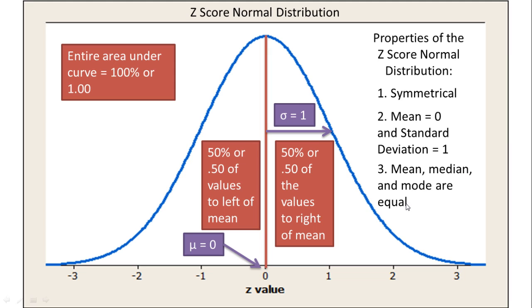Now this occurs in a z-score normal distribution, but it's necessary that the distribution is normal in order for the properties of the 50% on each side to be true.